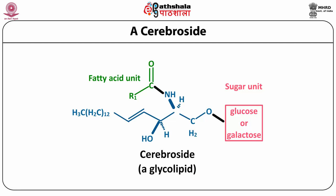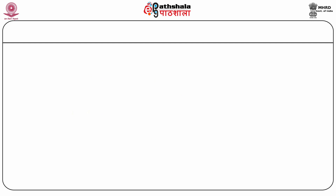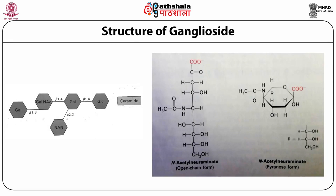Brain white matter contains galactocerebrocytes which are rich in sulfate ester analogs with C3 of the galactose esterified. Such sulfate esters have been sometimes referred to as sulfatides. The glycosphingolipids found in the nerve tissues and the spleen are gangliocytes. Structurally, gangliocytes have an oligosaccharide chain rather than a couple of sugar or sugar derivatives as in cerebrocytes. This oligosaccharide chain is attached to the ceramide. A characteristic feature of the sugar composition of gangliocytes is that the oligosaccharide chain contains at least one N-acetylglucosamine or N-acetylgalactosamine, and also at least one molecule of N-acetylneuraminic acid.